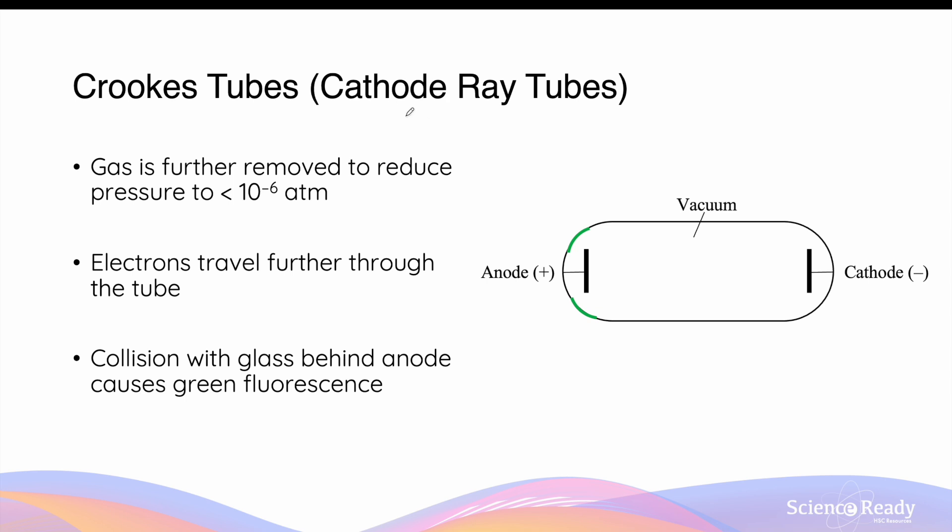Crookes tubes, or cathode ray tubes, are modified versions of gas discharge tubes in which the gas is further removed to reduce the pressure in the tube to less than 10 to the minus 6 atmospheric pressure. When the pressure in the tube is further reduced, the electrons that travel from the cathode to the anode can travel a further distance through the tube as there are less atoms and molecules of gases impeding the path of electrons.